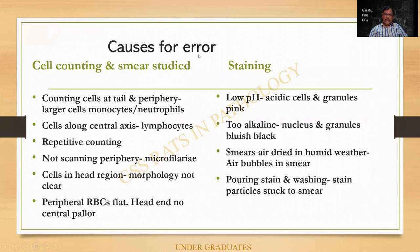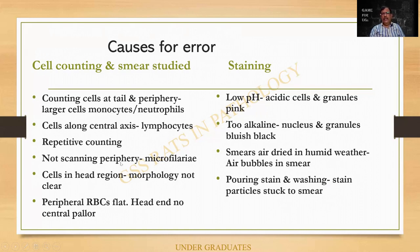There are some causes for error when we count. Counting cells at the tail and periphery — the larger cells will be repeatedly counted. If I count cells only along the central axis, lymphocytes will be over-represented. Repeated counting can cause mistakes. Not scanning the periphery is also an error. In fact, I am supposed to scan the slide under low power or even high power to rule out parasites such as microfilaria.